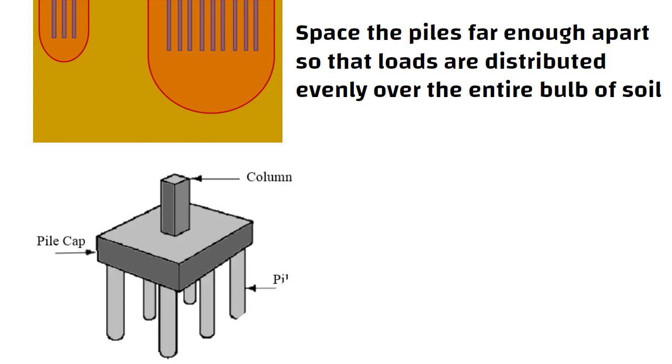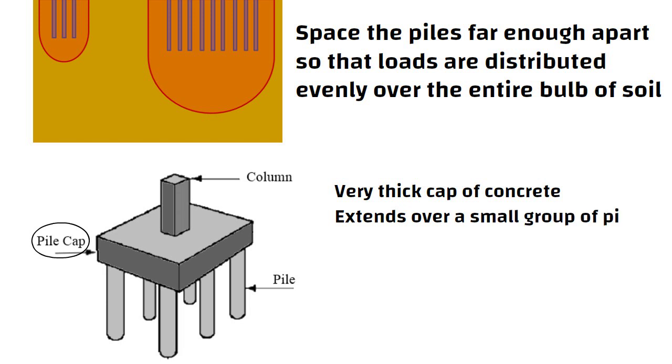Engineers will usually group a few piles together and top them with a pile cap. A pile cap is a very thick cap of concrete that extends over a small group of piles and serves as a base on which a column can be constructed. The load of this column is then distributed to all the piles in the group.